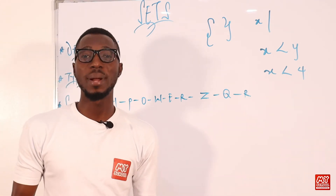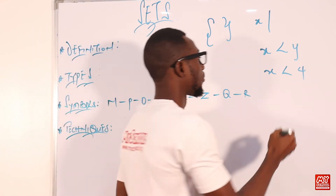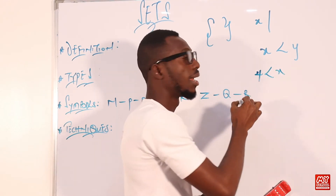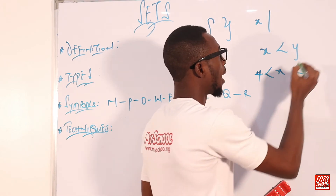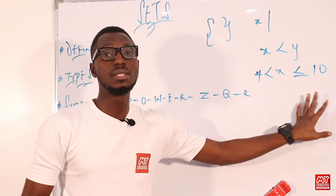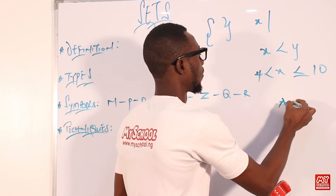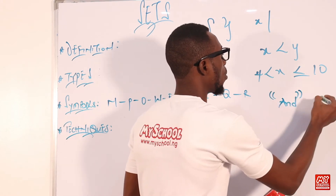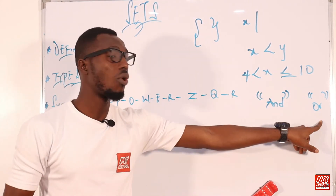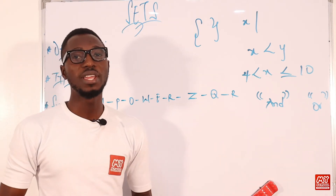Sometimes inequalities can be compounded. For instance, if I have x is less than 4, or 4 is less than x and x is less than or equals to 10, you can see this connection can be described using AND or OR. When you connect two inequalities together using AND or OR, that tells us it's a compound inequality. These tools will be very useful when we are working around sets.